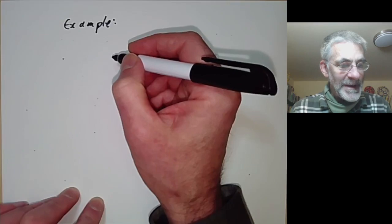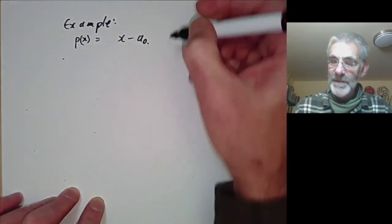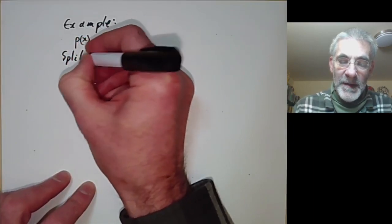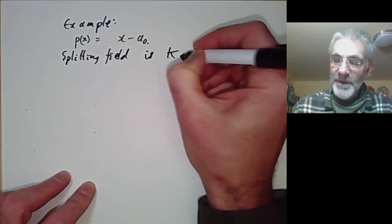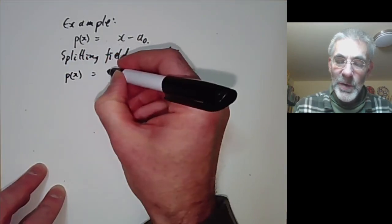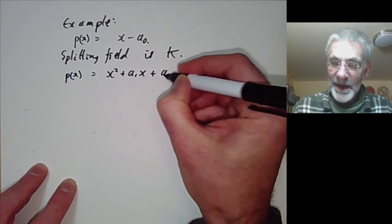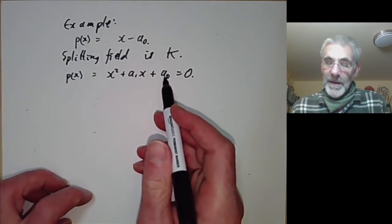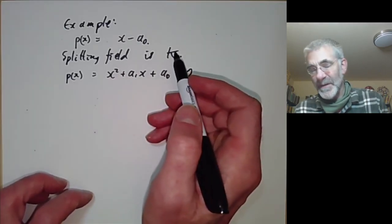Let's take a polynomial p(x) to be linear: x minus a₀. Then the splitting field is just k itself — that's completely trivial. For a slightly more complicated example, let's take p to be quadratic: x² + a₁x + a₀. If this is reducible and splits into linear factors, the splitting field is k again.